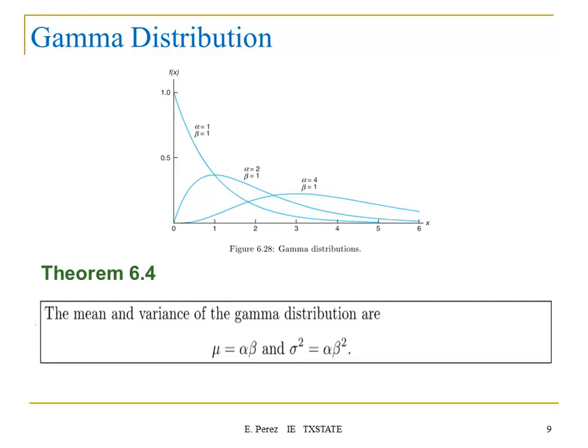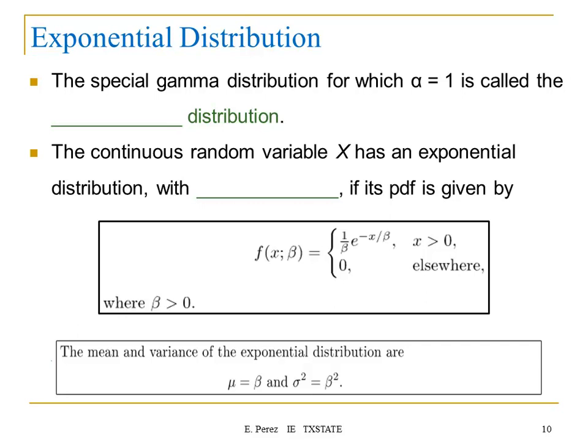The special case of the gamma is the exponential, and this one is very important. The special gamma distribution for which alpha equals one is called the exponential distribution. The continuous random variable x has an exponential distribution with parameter beta if its PDF is given by (1/beta) times e to the negative x over beta, for x greater than zero. Beta is the mean for the exponential distribution, and the variance is beta squared.